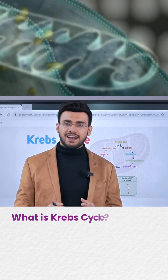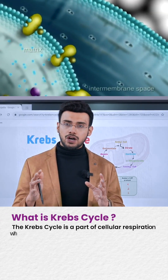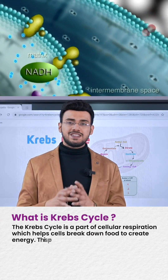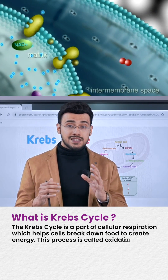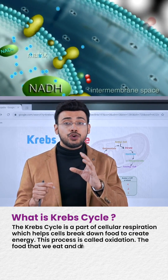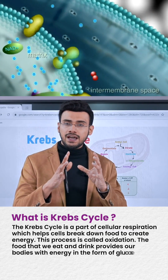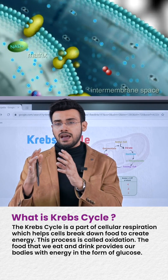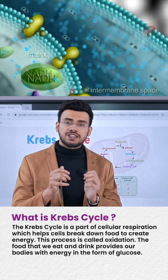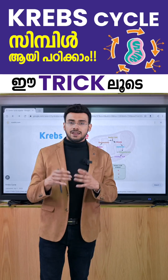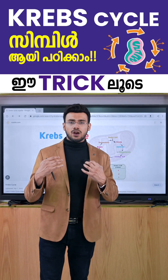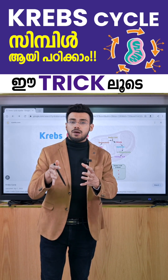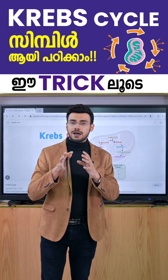The Krebs cycle, or TCA cycle, is part of cellular respiration, which helps cells break down food to create energy. Food is split into energy — this is oxidation — and we are getting energy. Glucose is one step in this process.